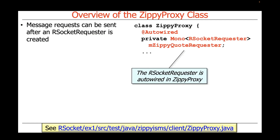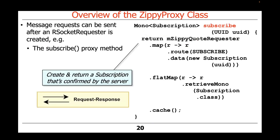After the RSocket requester is created, messages can start to flow. We auto-wire the Mono to the RSocket requester through the client bean we saw, and put that in the ZippyProxy class as a field. Here are a couple of proxy methods. The subscribe proxy method is used to create and send a subscription message to the server, and then it gives us back a subscription that's confirmed by the server.